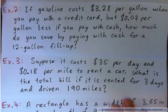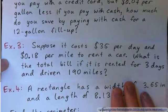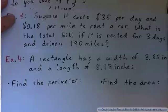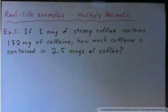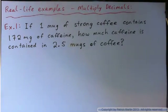Example 2, gasoline, costs and amounts to fill up with 12 gallons. Example 3 is renting a car. Example 4 is area and perimeter of a rectangle with decimal inches. So look at example 1. Have a read of it and see if you can do it. It says if one mug of strong coffee contains 172 mg of caffeine, how much caffeine is contained in 2.5 mugs of coffee? Now hopefully you might be familiar with the fact that 0.5 is a half. So we are talking about 2.5 mugs of coffee. If you drank 2.5 mugs of coffee, how much caffeine did you take altogether?